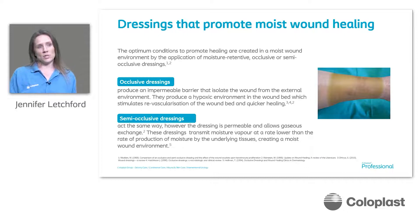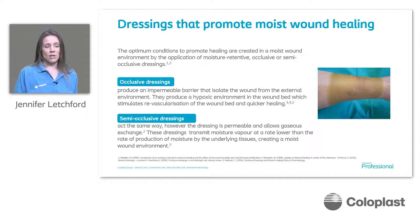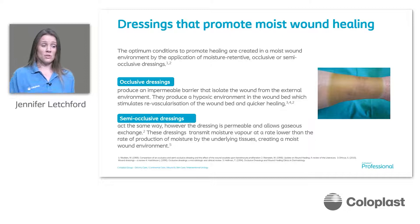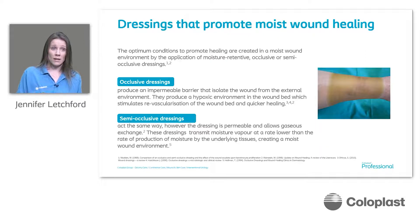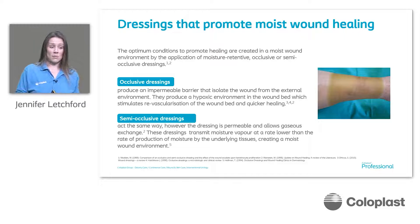When thinking about dressings that promote moist wound healing, we need to consider what we're selecting to help create that optimum healing environment. We look at occlusive dressings or semi-occlusive dressings. Occlusive dressings produce an impermeable barrier isolating the wound from the external environment and produce a hypoxic environment which stimulates revascularisation of the wound bed to help with healing. Semi-occlusive dressings act in a similar way, however the dressing is permeable and allows gaseous exchange, transmitting moisture vapour at a lower rate to create a moist environment for healing.